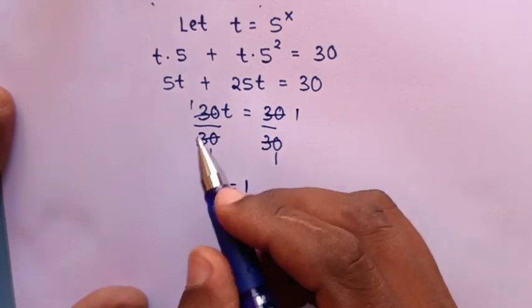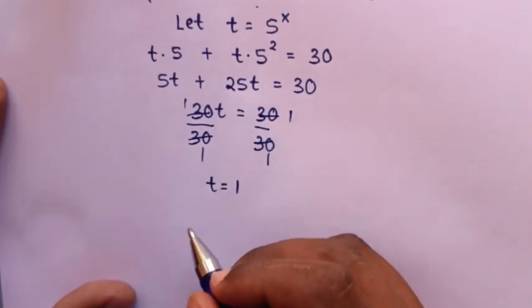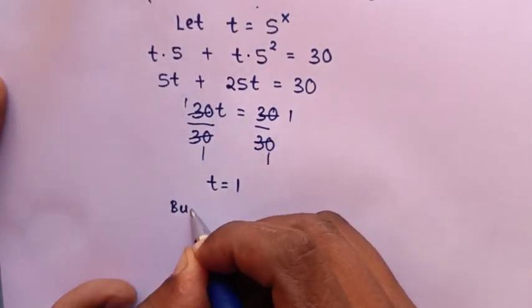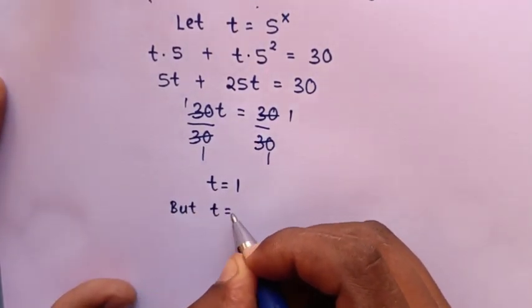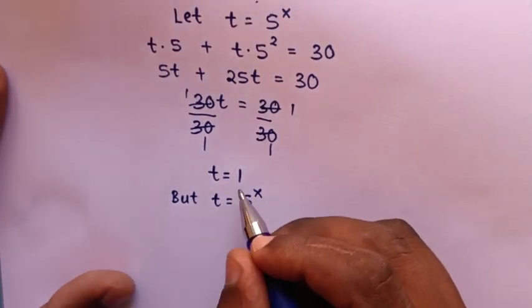But t equals 5 power x, so 5 power x equals 1.